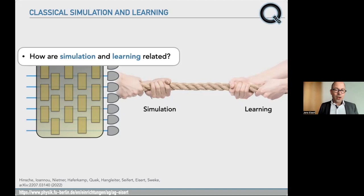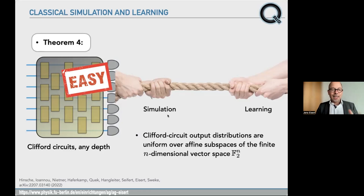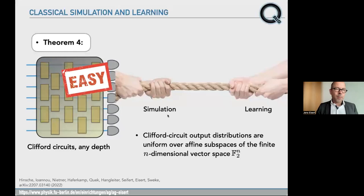Clifford circuits are easy to simulate — that's true by virtue of the Gottesman-Knill theorem, both in the strong and weak sense of simulation. You can sample efficiently from the output distribution of Clifford circuits (weak simulation), or you can compute the probabilities (strong simulation). And if you think output distributions of Clifford circuits are easy to learn — it will be a relief that, yes, you can learn them. From the sample oracle, you can efficiently learn them, for Clifford circuits of any depth. It's actually not so trivial, because there are still exponentially many different circuits, and you want to learn the output distribution of a Clifford circuit, not the circuit itself, which is a subtler task.